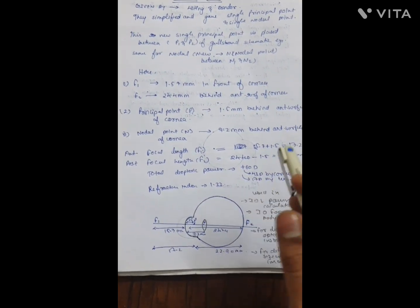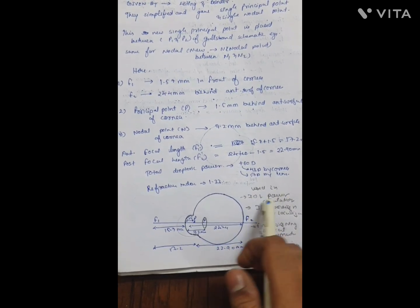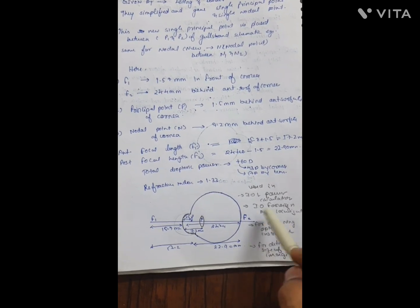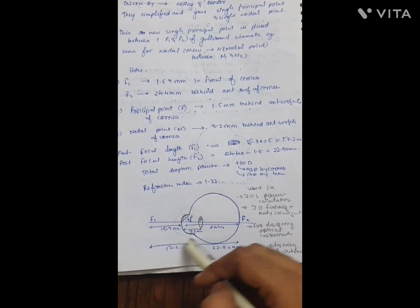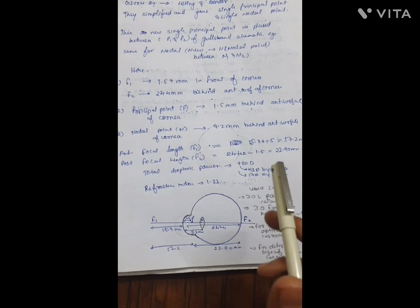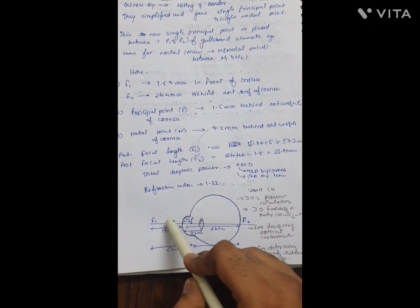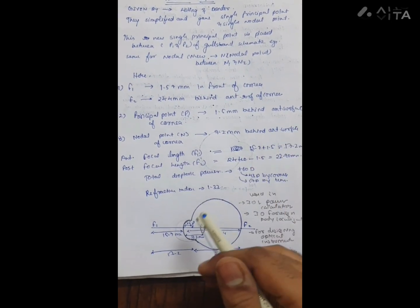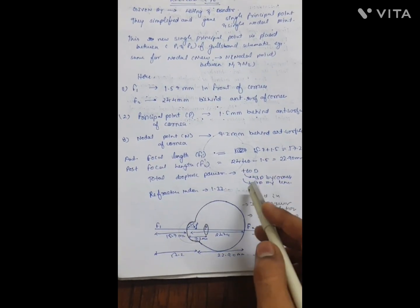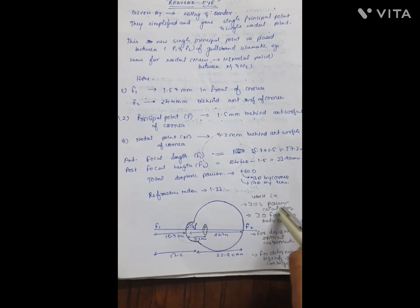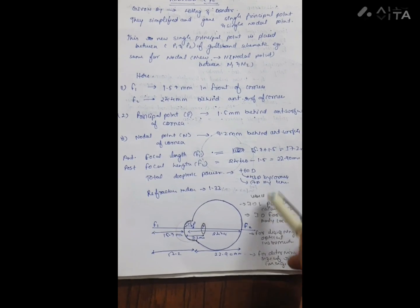The reduced eye is used for intraocular lens power calculation, intraocular foreign body localization - when a foreign body enters the eye we can calculate where it would be located based on these numbers and calculations. It's also used for determining the size of retinal images and for optical instrument designing.